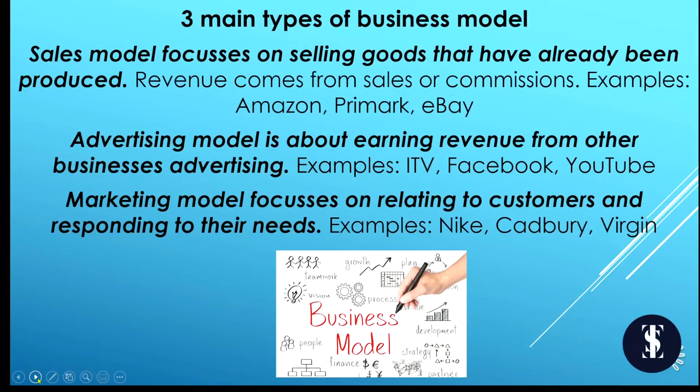Three types of business model. The sales model focuses on selling goods that have already been produced; revenue comes from sales or commissions — think about Amazon, Primark or eBay. The advertising model is about earning revenue from other businesses advertising — think about ITV, Facebook or YouTube. The marketing model focuses on relating to customers and responding to their needs — think about Nike, Cadbury or Virgin.